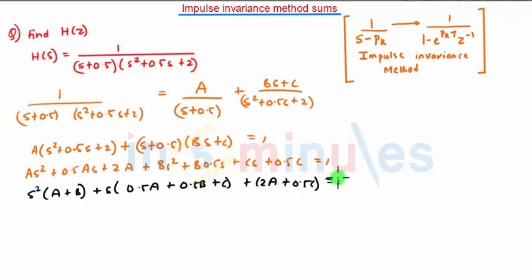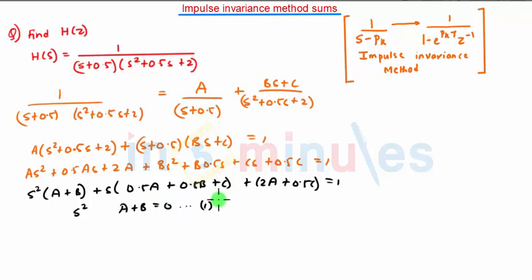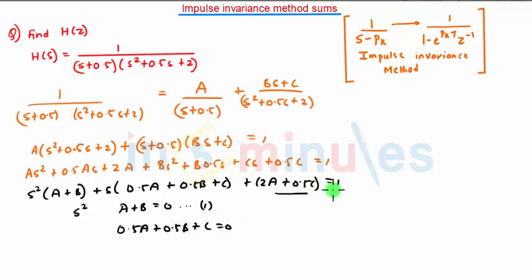Comparing the left-hand side and right-hand side terms, we see there is no s² term on the RHS, so the s² term will be 0. That means A + B = 0 — this is equation one. The s term is also not present, so we get 0.5A + 0.5B + C = 0. And comparing constant terms, 2A + 0.5C = 1.